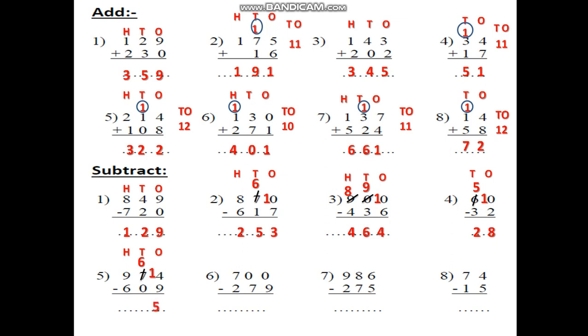6 minus 0 is 6. 9 minus 6. After 6: 7, 8, 9. It will be 3. The answer is 365.